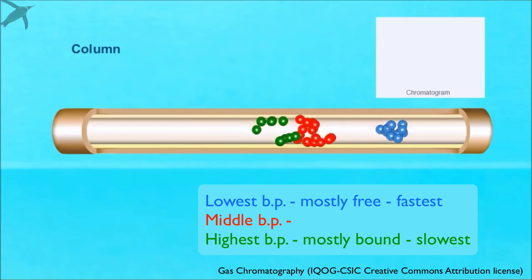As a result, the most volatile component will travel faster than the others, and will be in front of the pack, followed by the medium volatility component, and finally, the least volatile component, which is the slowest.